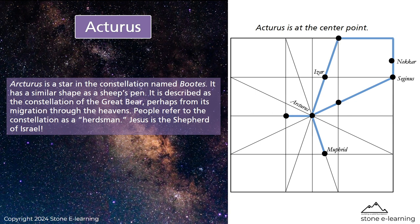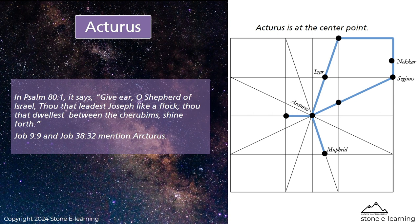Arcturus is a star in the constellation named Boötes. It has a similar shape as a sheep's pen. It is described as the constellation of the Great Bear, perhaps from its migration through the heavens — people refer to the constellation as a herdsman. Jesus is the Shepherd of Israel. In Psalm 81 it says, 'Give ye, O Shepherd of Israel, thou that leadest Joseph like a flock. Thou that dwellest between the cherubims, shine forth.' Job 9 and Job 38:32 mention Arcturus.